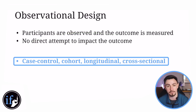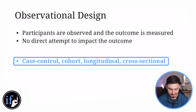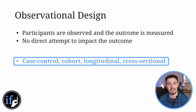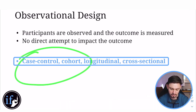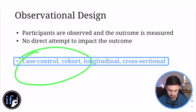There are four different types of observational study we're going to discuss today: case control, cohort, longitudinal, and cross-sectional. It's really important not to confuse these, so make sure you pay close attention.